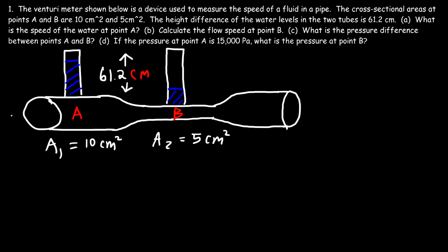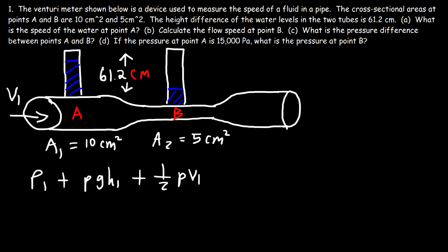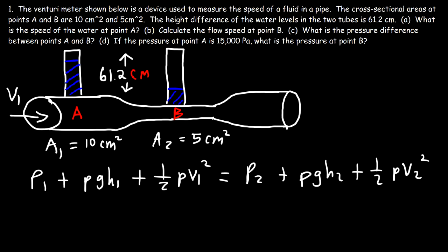So how can we calculate the speed that flows in this tube? There is a formula you can use to get the answer, but let's talk about how to derive that formula. We start with Bernoulli's equation: P1 + ρgh1 + ½ρV1² = P2 + ρgh2 + ½ρV2². Now points A and B are at the same height level, so we can set that as the ground level, which means h is zero, and we don't need those two height terms in the equation.